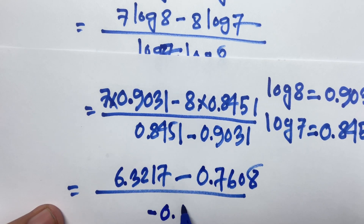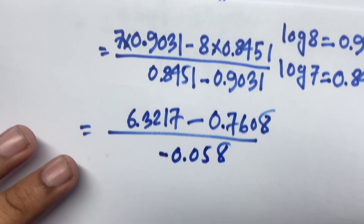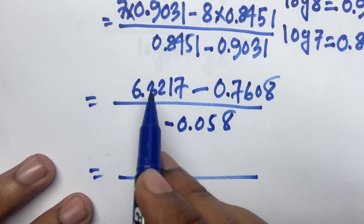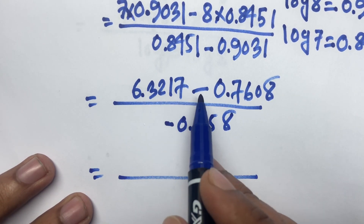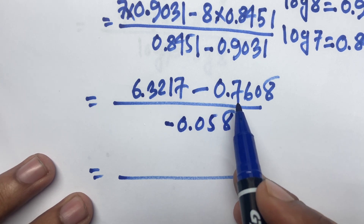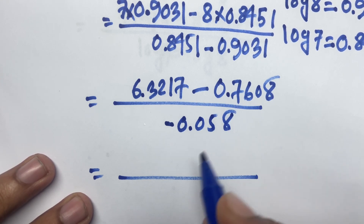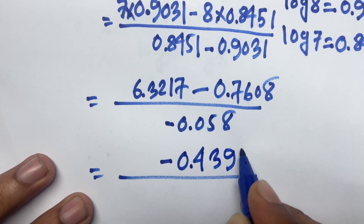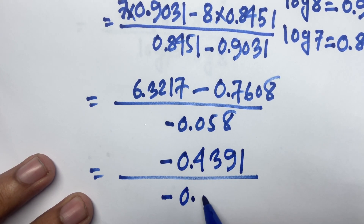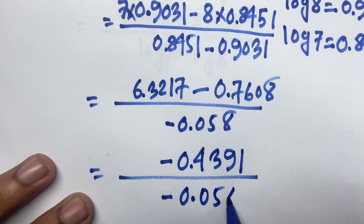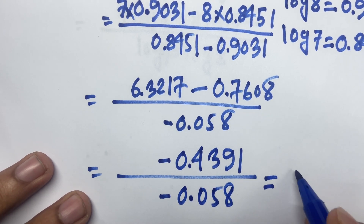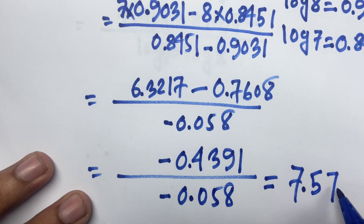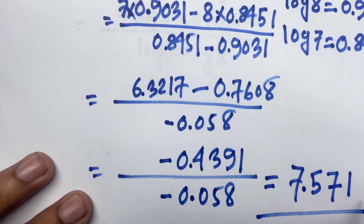The denominator gives minus 0.058. The numerator gives 6.3217 minus 6.7608, equal to minus 0.4391. Dividing minus 0.4391 by minus 0.058, the answer is approximately 7.571. Thank you all.